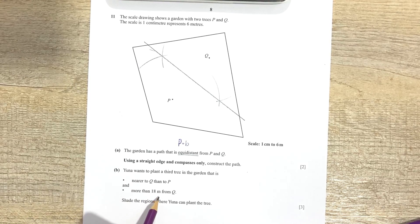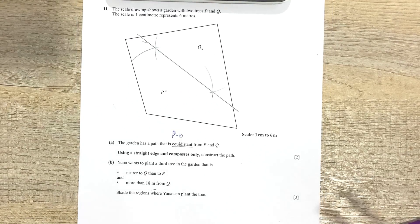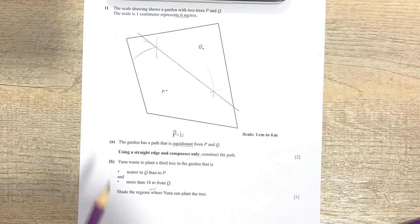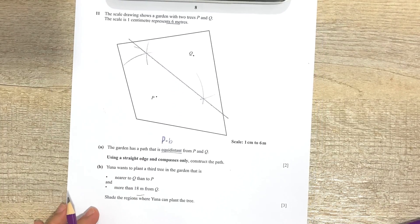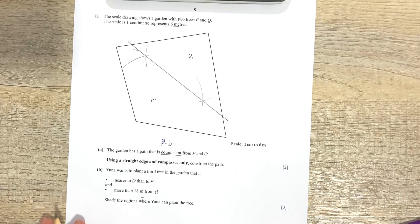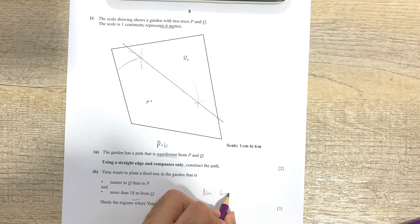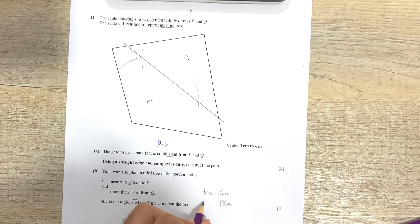Okay, but we'll share that later. But next it says more than 18 meters from Q. Okay, so more than 18 meters. Now if you remember, initially the question gave us a scale and that said one centimeter represents six meters. Okay, so 18 meters means so we have one centimeter which is equal to six meters.